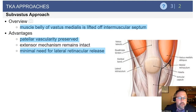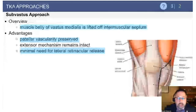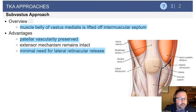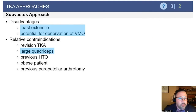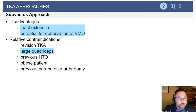The sub-vastus approach is popularized in an attempt to avoid the quadriceps mechanism. It has similar advantages to the mid-vastus in that the patella, quadriceps mechanism, and quad tendon are not violated. Relative contraindications include patient habitus — obese patients may be difficult. It is the least extensile exposure and can be very difficult in people who have a large quadriceps mechanism for eversion or lateralization of the patella.